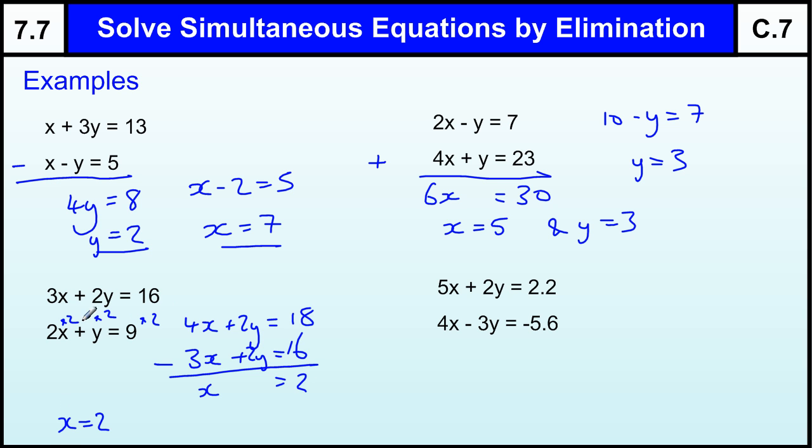And then if I use that into this first equation, where X equals 2, I have got 4 plus Y equals 9. So Y would be 5, because 4 plus 5 is 9. Let us just check to see if that works. So if we put the X equals 2 into there we get 6, plus 2 lots of 5 is 10, makes 16. So that works.